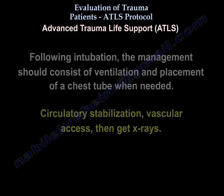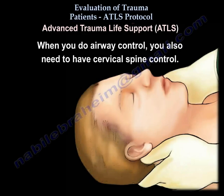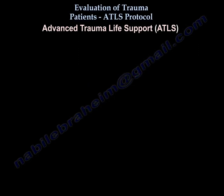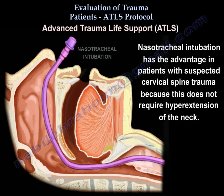Following intubation, management should consist of ventilation and placement of a chest tube if needed, then vascular access and circulatory stabilization, then X-rays. When you do airway control, you need to have C-spine control. Nasotracheal intubation has the advantage in patients with suspected C-spine trauma because it does not require hyperextension of the neck.